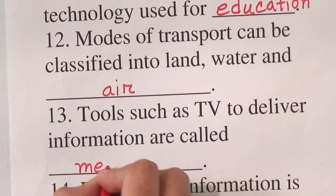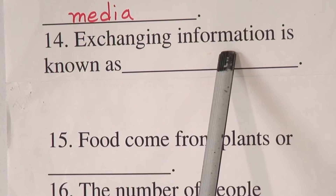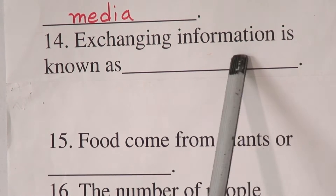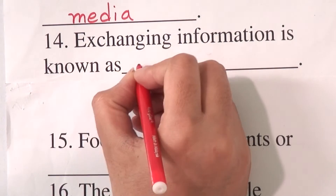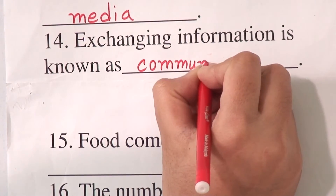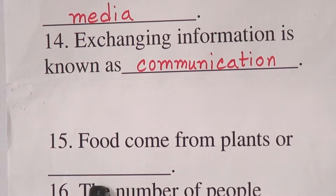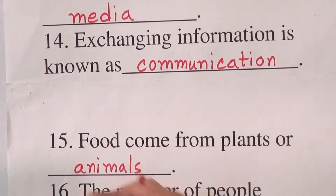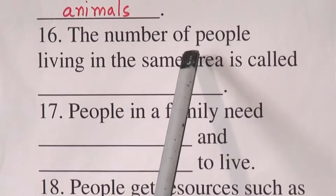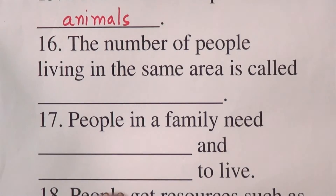Number 14: exchanging information is known as — the answer is communication. So we will write here: communication. Number 15: food comes from plants or — the answer is animals. Number 16: the number of people living in the same area is called — the answer is population. So we will write here: population.